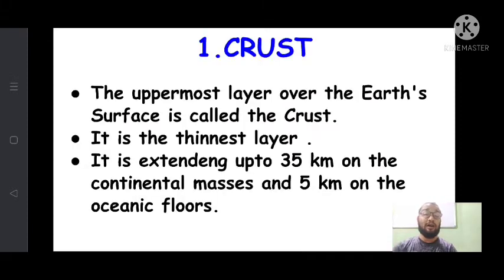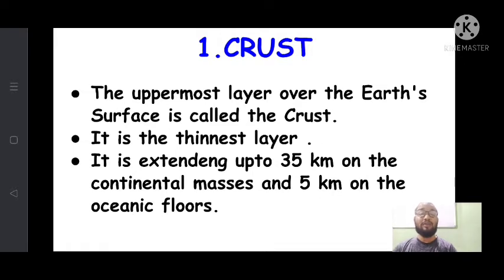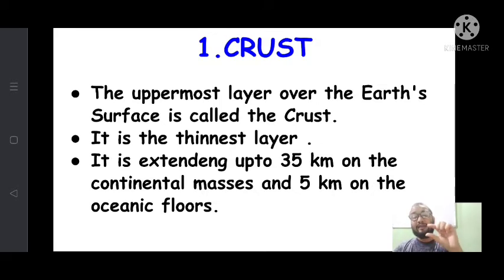The first layer is the crust — the uppermost layer of the earth's surface. It is the thinnest layer, with very little depth. It extends up to 35 kilometers on the continental masses and only 5 kilometers on the oceanic floor.